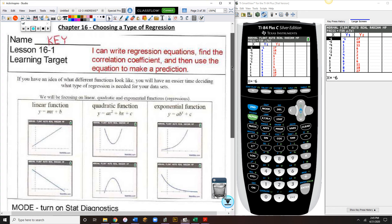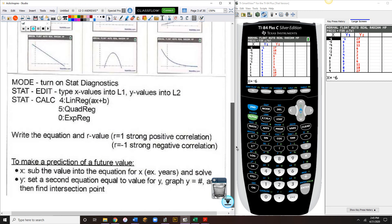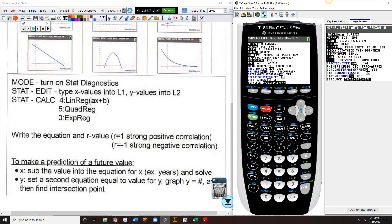Important calculator notes: make sure you go into your mode and turn on your stat diagnostics. That's right here, stat diagnostics, make sure you have that clicked on. Remember what that does is when we do regressions, it turns on the correlation coefficient or the R value.